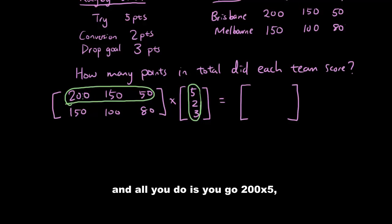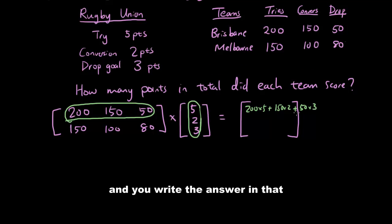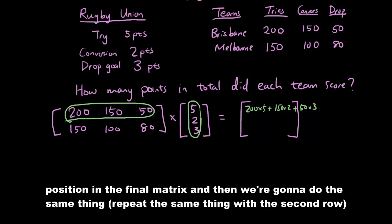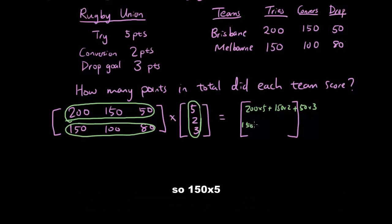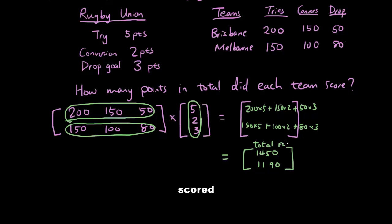So you go 200 times 5 plus 150 times 2 plus 50 times 3, and you write the answer in that position in the final matrix. Then repeat the same thing with the second row: 150 times 5 plus 100 times 2 plus 80 times 3. The final answers are 1,450 and 1,190 — the total number of points scored by Brisbane and Melbourne. So Brisbane is the better team, sorry Melbourne!